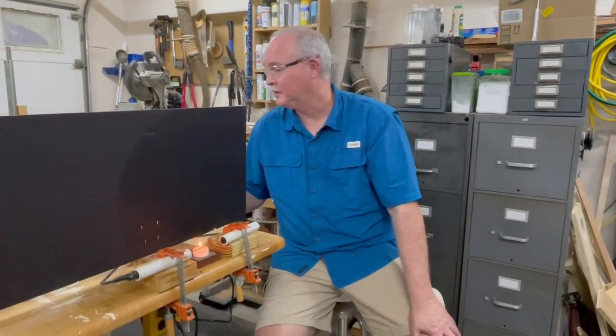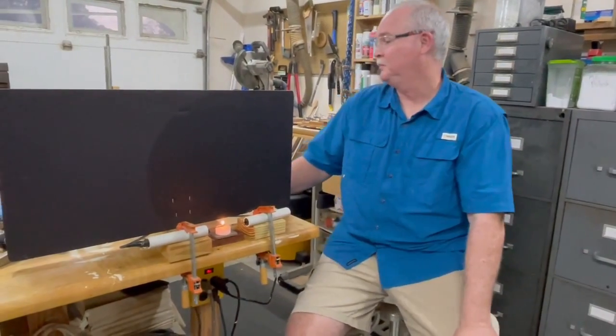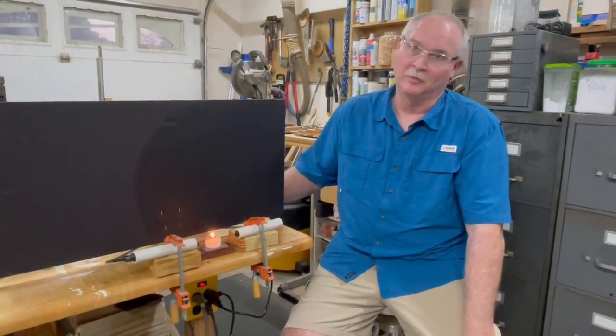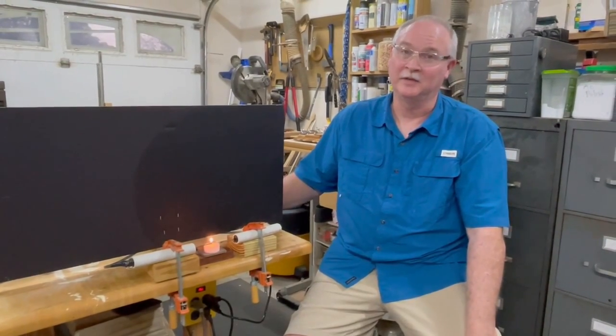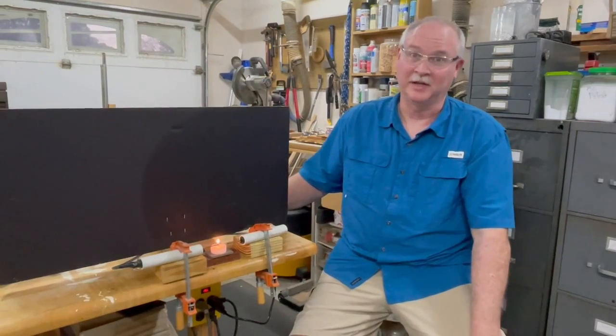This is a 10 kilovolt AC power supply, 60 Hertz, 800 milliamps. So instead of being one side positive and one side negative, it's going to alternate between positive and negative 60 times a second roughly.